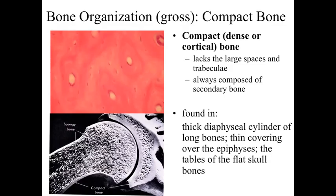The second type of bone organization at the gross anatomical level is compact bone, also called dense bone or cortical bone. It lacks the large spaces and trabeculae seen in spongy bone, and is always composed of secondary bone. We find compact bone in the thick diaphyseal cylinders of the long bones — the outer covering and shaft — the covering over the epiphyses, and the tables of the flat skull bones.